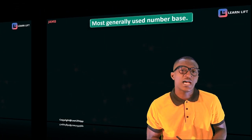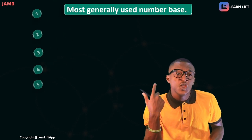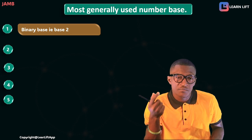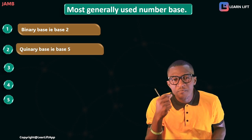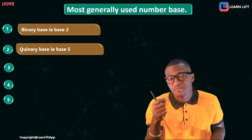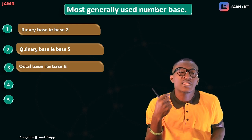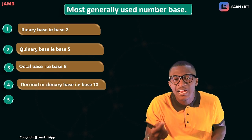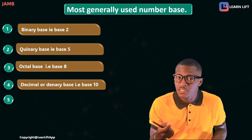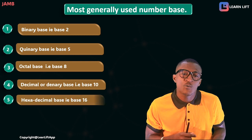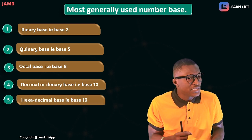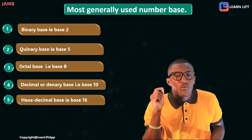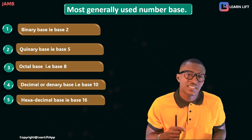Now, what are the most generally used bases? There are five of them. Number one is binary base, which is base two. Number two is quinary base, which is base five. Number three is octal base, which is base eight. Number four is decimal or denary base, which is base ten — this is the common base. Number five is hexadecimal base — 'hexa' means six and 'decimal' means ten, so combined that gives us base 16.